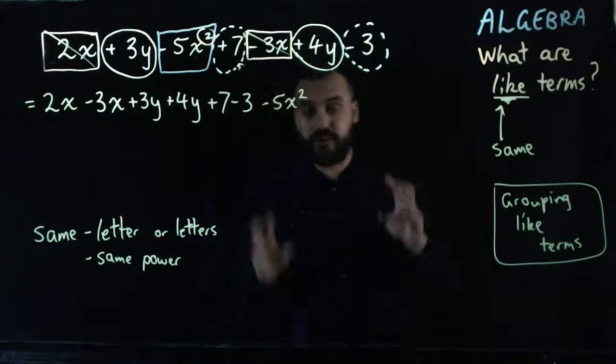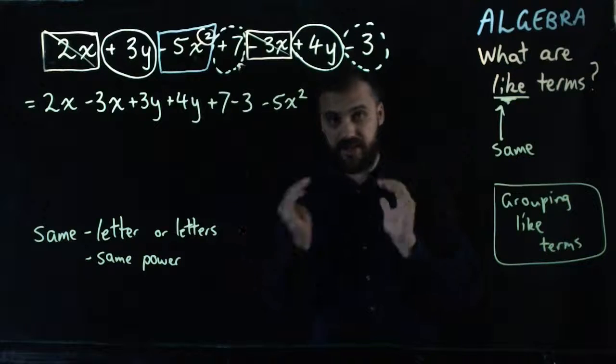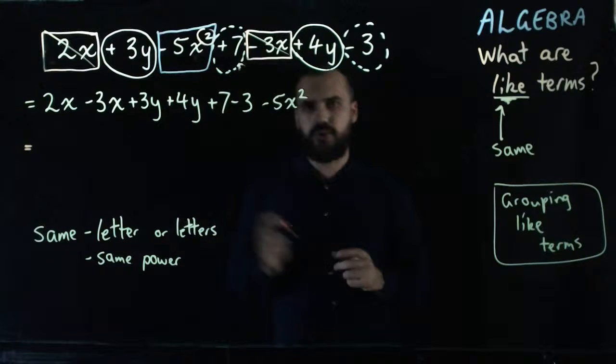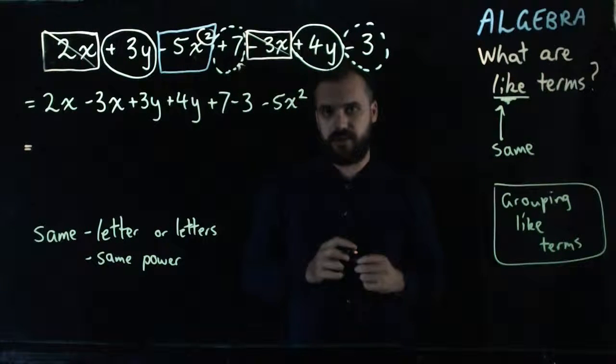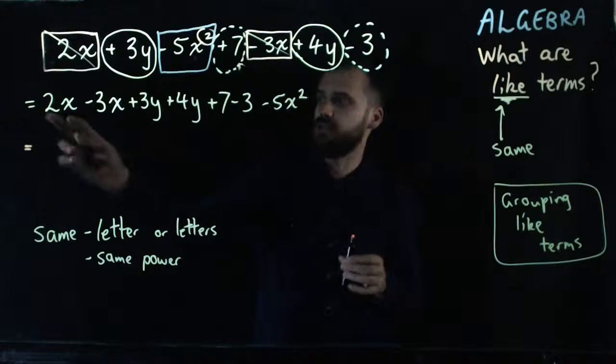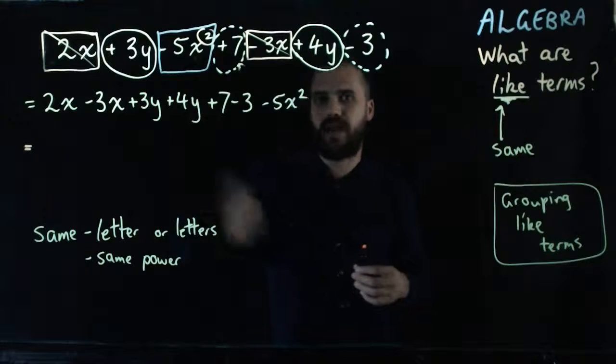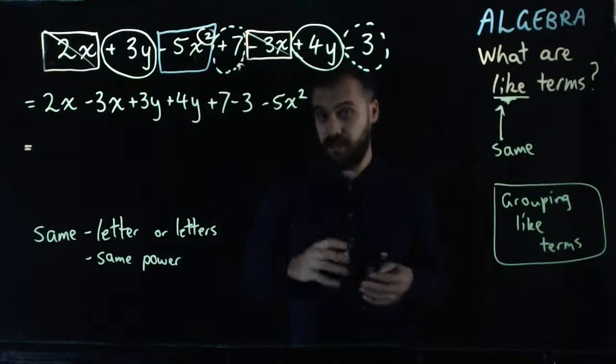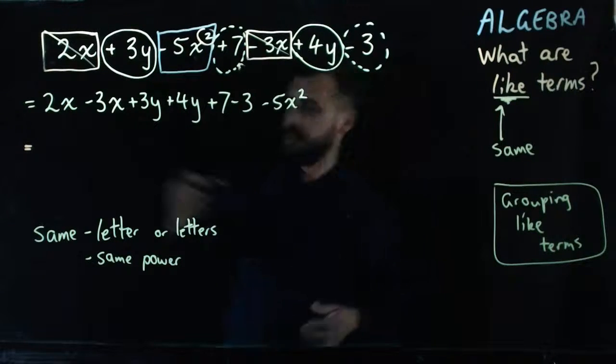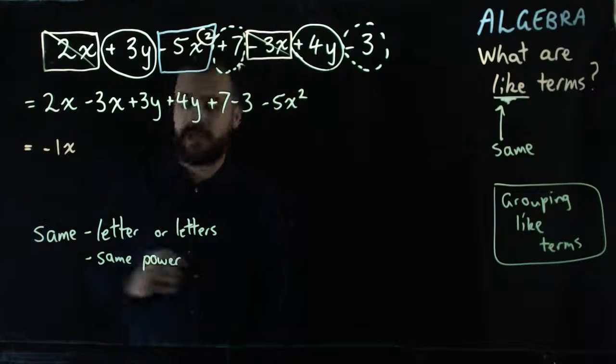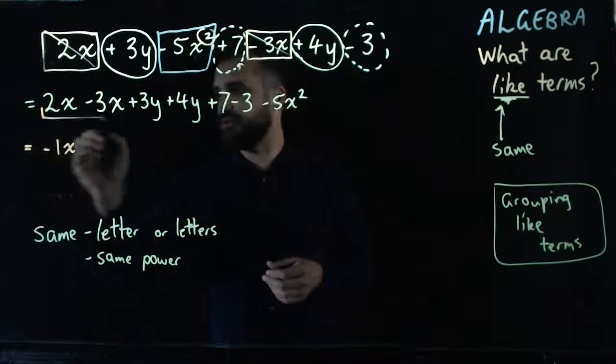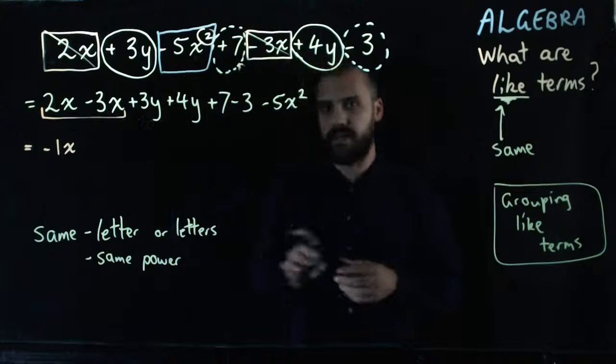Now that I've grouped my like terms, I can start condensing them. Let me show you what I mean. 2x minus 3x. Another way to think about this x business is to think about a thing. So, 2 apples minus 3 apples. Now, this is a bad example, but we're going to use it. 2 minus 3 is minus 1. So, that's going to be minus 1x. I'm going to leave that there for a second. I'll come back to it. 2x minus 3x is minus 1x.